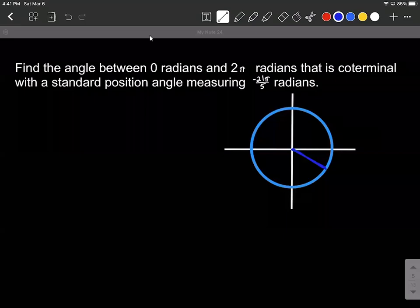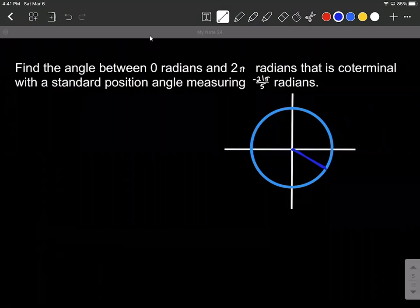Okay, we're tasked with finding an angle between zero radians and two pi radians that's coterminal with a standard position angle measuring negative 21 pi over five radians.